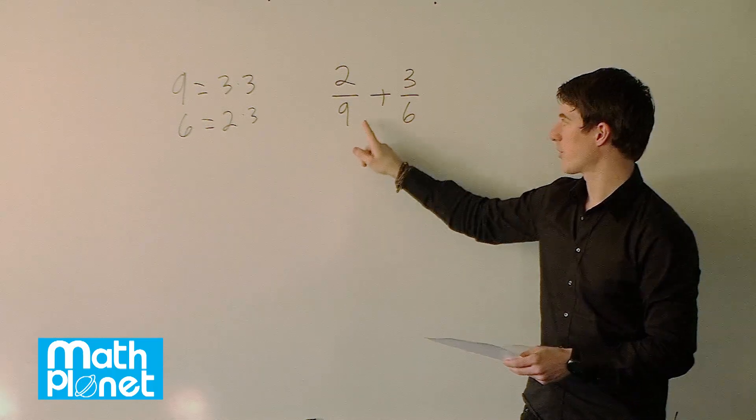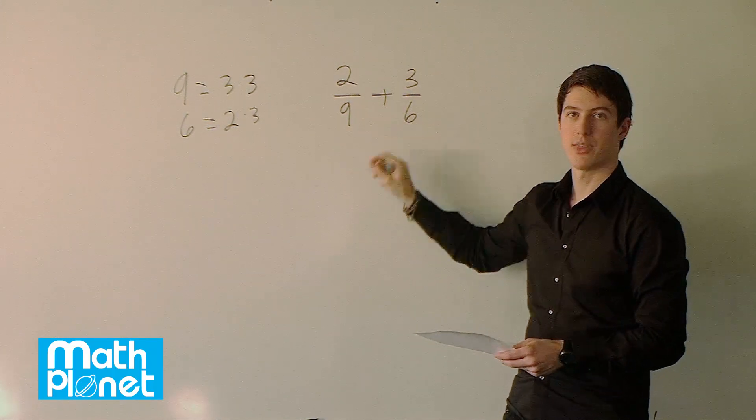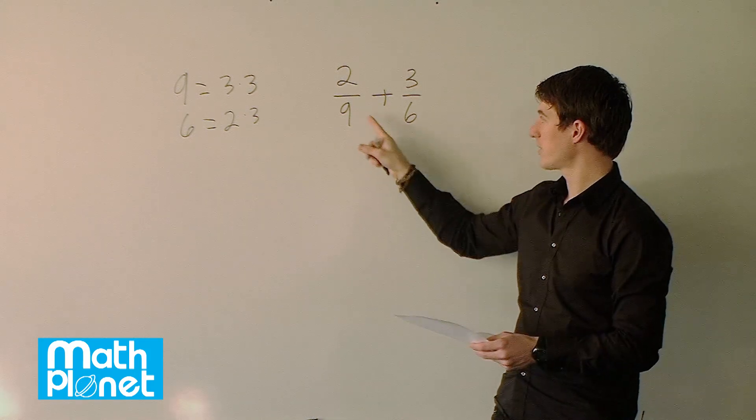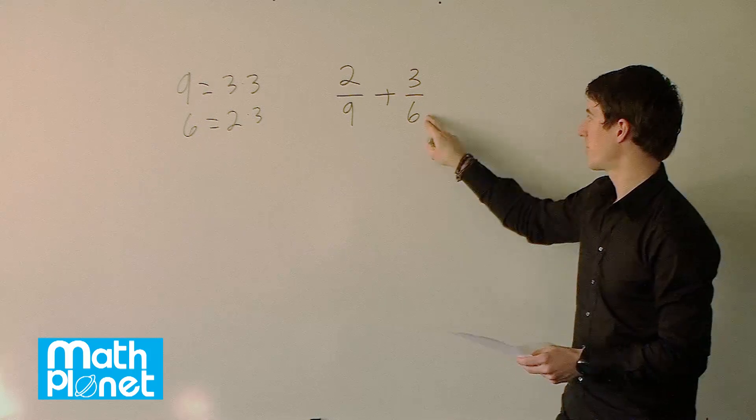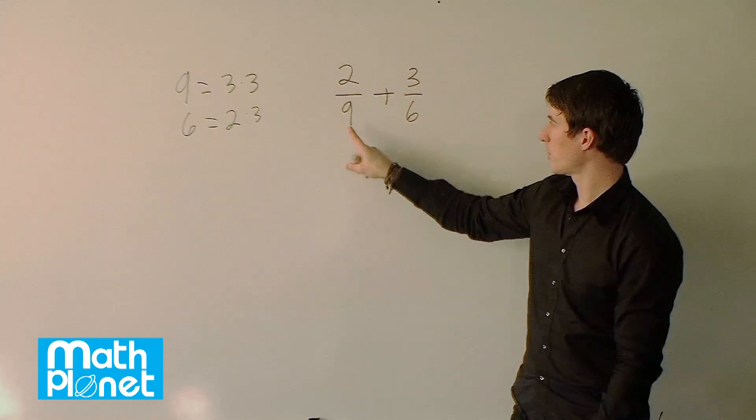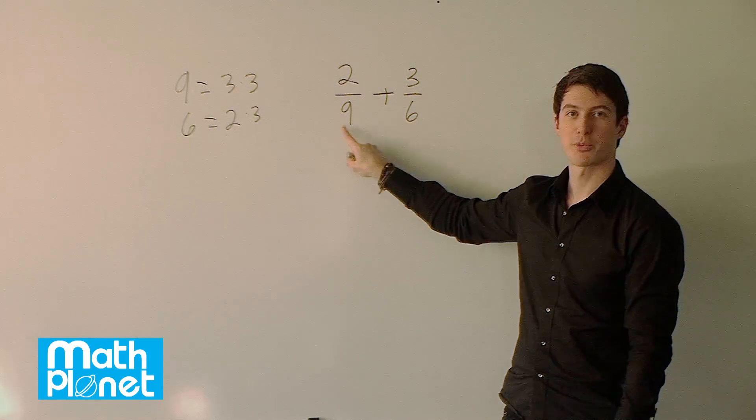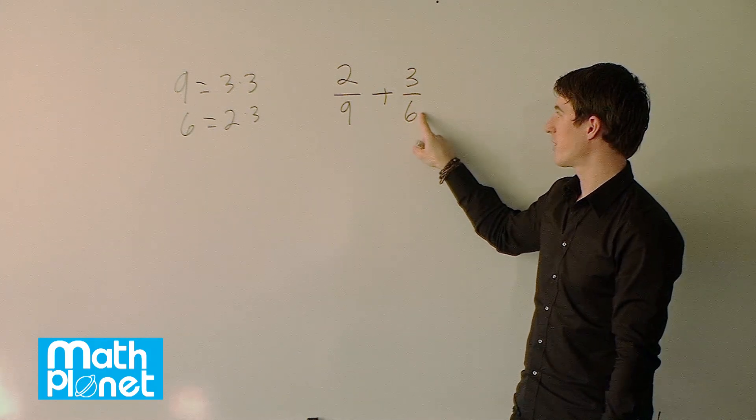So if we, in other words, replace this with 18 and this with 18 somehow then we can add them together. To get this to 18 we need to do something to the numerator and the denominator. So what do we need to get this to 18? We need to multiply this by 2. To get this to 18 we need to multiply this by 3.